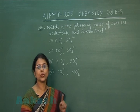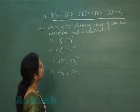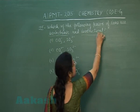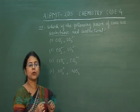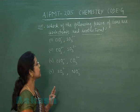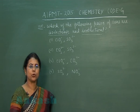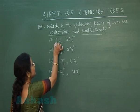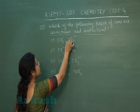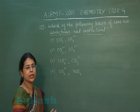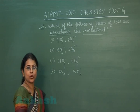Question number 155: Which of the following pairs of ions are iso-electronic and iso-structural? For ions to have the same number of electrons, the central atom should be from the same period. In the first option, the central atom is Cl and here the central atom is sulfur — both are from the same period, and the surrounding atoms are also similar. So these two species are iso-electronic as well as iso-structural.